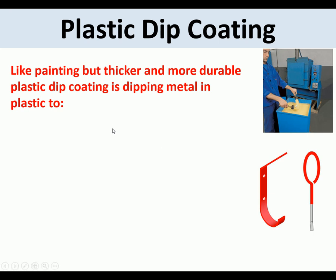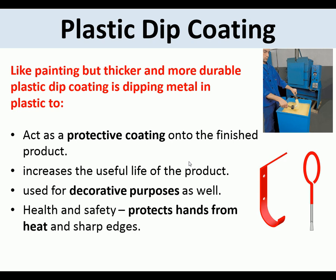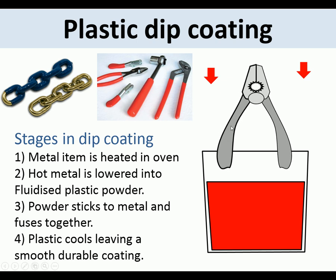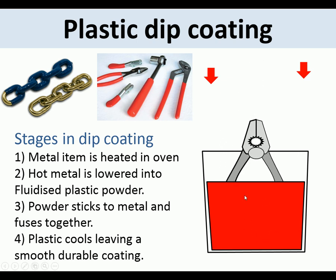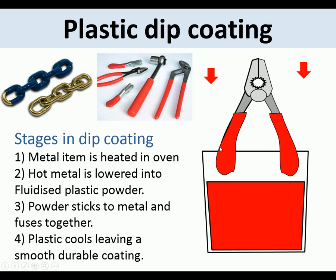Plastic dip coating is like painting but a thicker, more durable process. The metal is dipped into a plastic coating, giving a plastic protective coating on the finished product. It increases the useful life of the product, can be used for decorative purposes, and can give a better grip to make tools more ergonomic. The stages are: heat the metal item in an oven; lower the hot metal into a fluidized powder with air blown through it — the powder sticks to the metal and fuses together; withdraw the tool from the bath; the plastic cools leaving a smooth, durable coating.